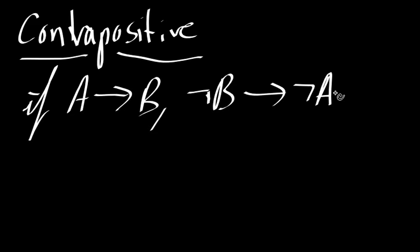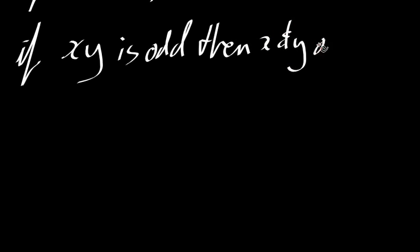Of course, that's very rarely the form you'll see in an exam or some kind of question. You usually see it in the form of a question like this. So if x times y is odd, then x and y are odd. So if we want to prove this by contrapositive, then we can start out by separating our statements.